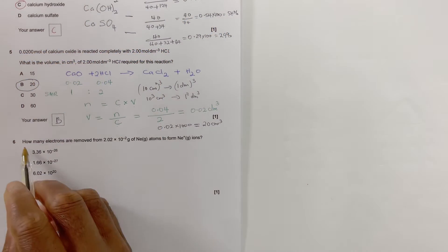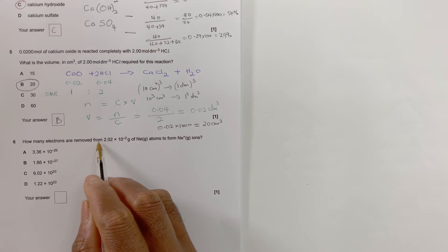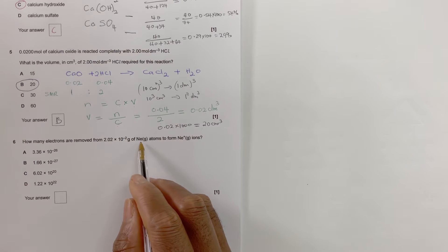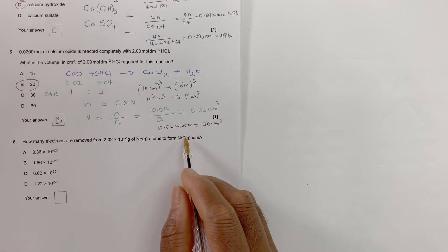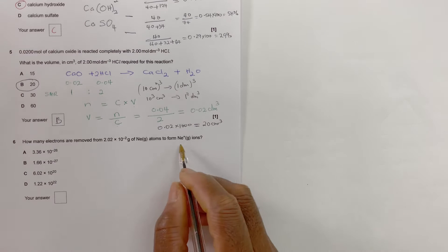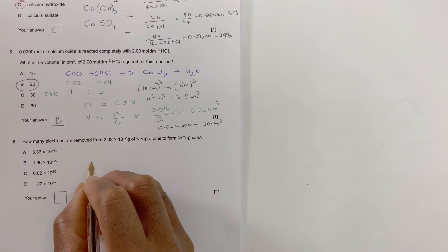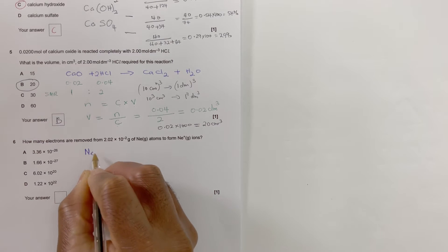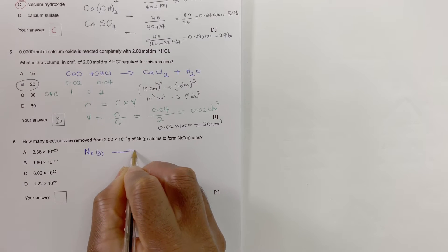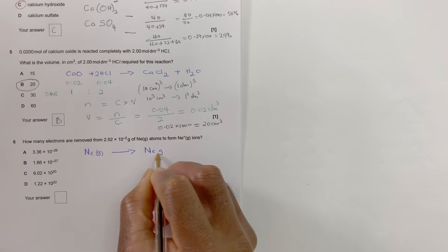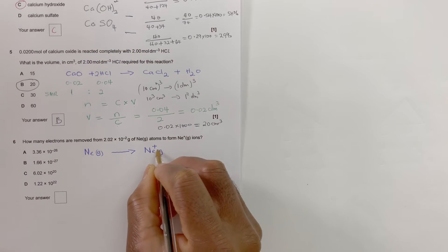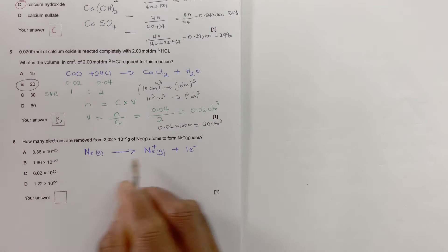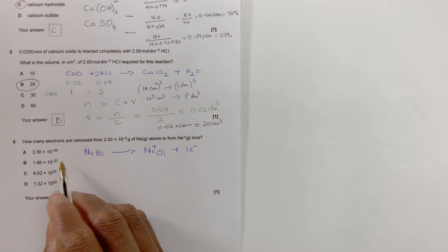Question 6: how many electrons are removed from 2.02 times 10 to the power minus 2 grams of neon gas atoms to form neon ion cation gas? That's a cation — it can be a bit confusing, so the best approach is to write an equation. Neon gas when it loses an electron will be Ne(g) → Ne+(g) + e⁻.